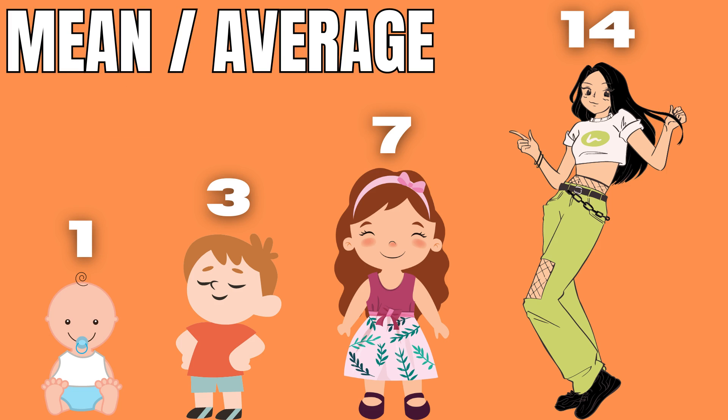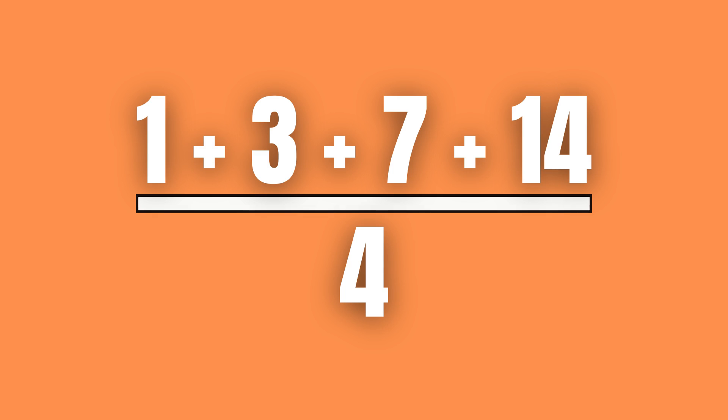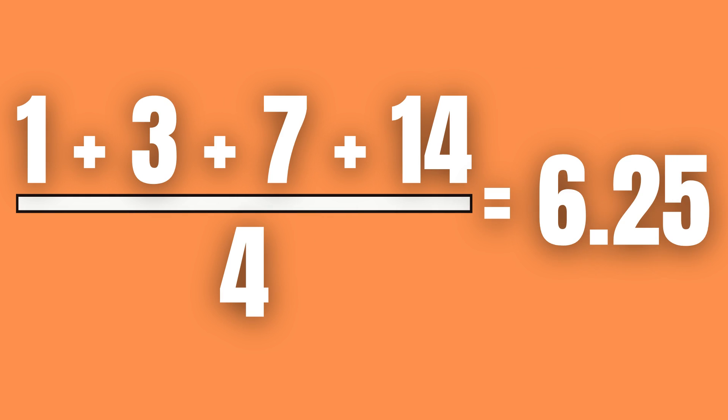we begin by calculating the mean or average age of the siblings. This is done by adding the ages of the siblings together and dividing that sum by the total number of siblings. This gives us an average or mean age of 6.25 years.